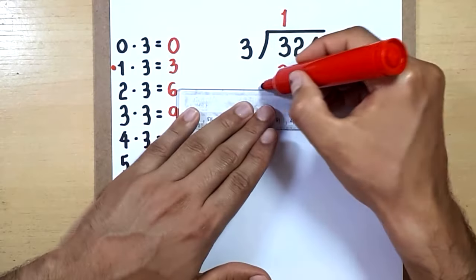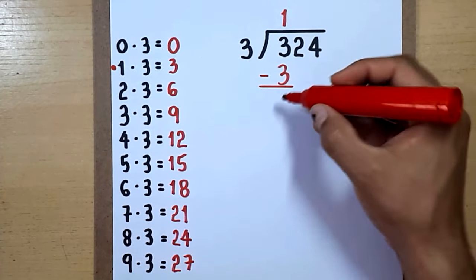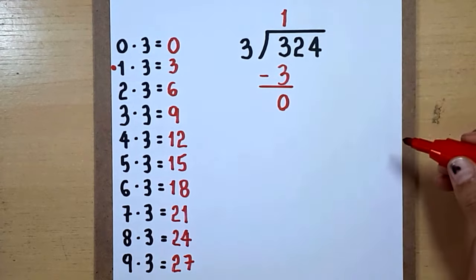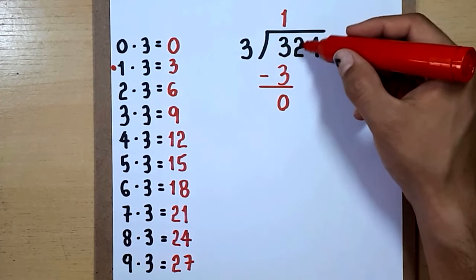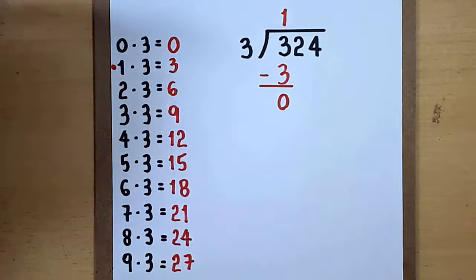We subtract: 3 minus 3 equals 0. After a subtraction we bring down the next digit. It's a 2.